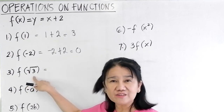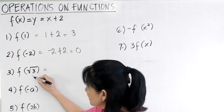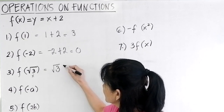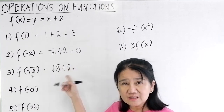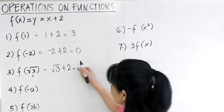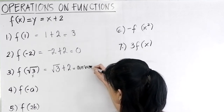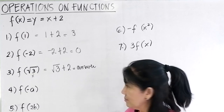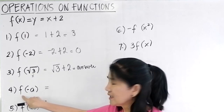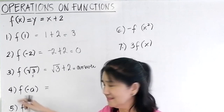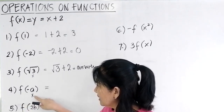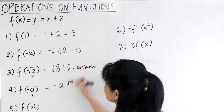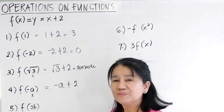If you're asked to find f(√3), simply make x equal to √3. Substituting, you get √3 plus 2. Can you still add these? No — they are unlike terms, so this is already your final answer. Next, for f(-a), simply substitute -a for x. This becomes -a plus 2, which is the final answer.